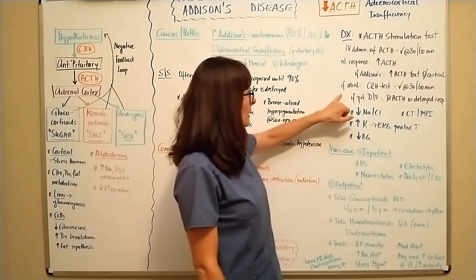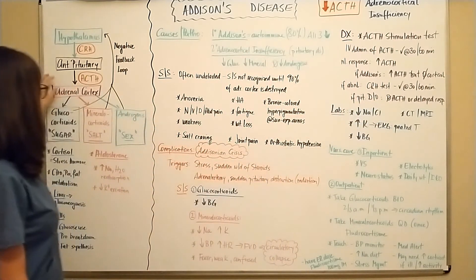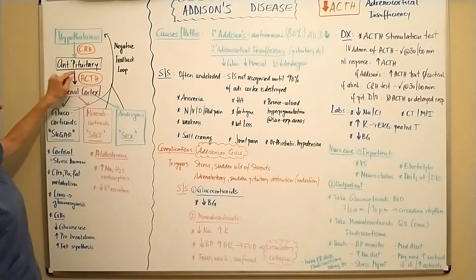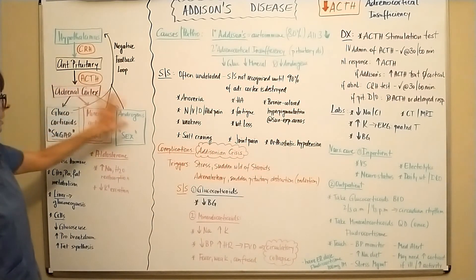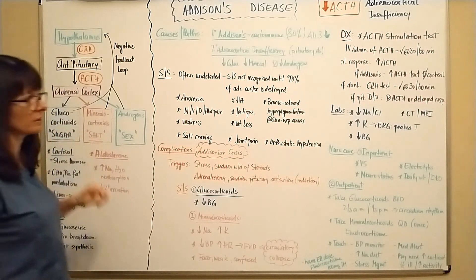And if we have a pituitary disorder, it would mean that the pituitary is now not able to produce ACTH, which would basically mean that none of this can be measured. And we would basically measure the ACTH in the serum.